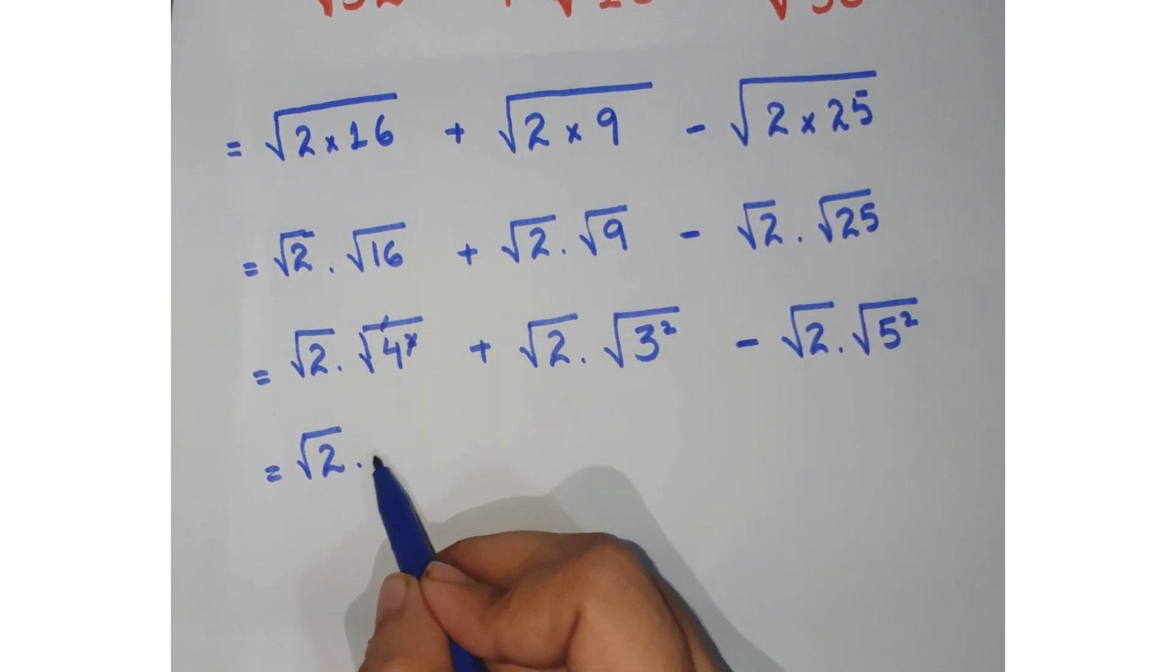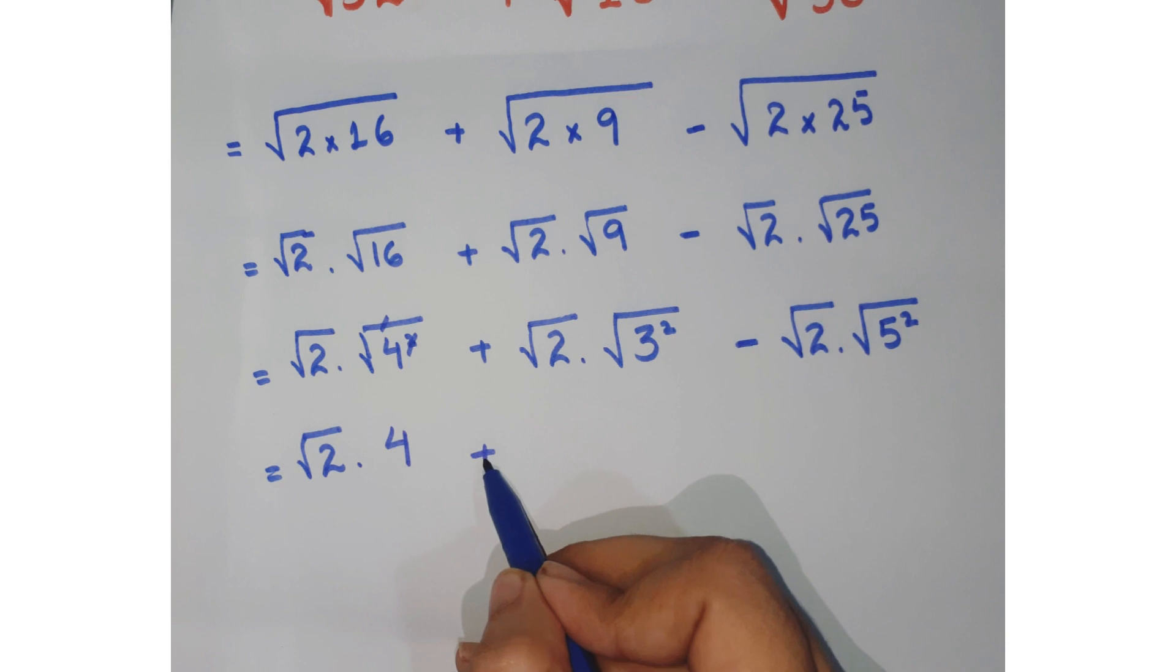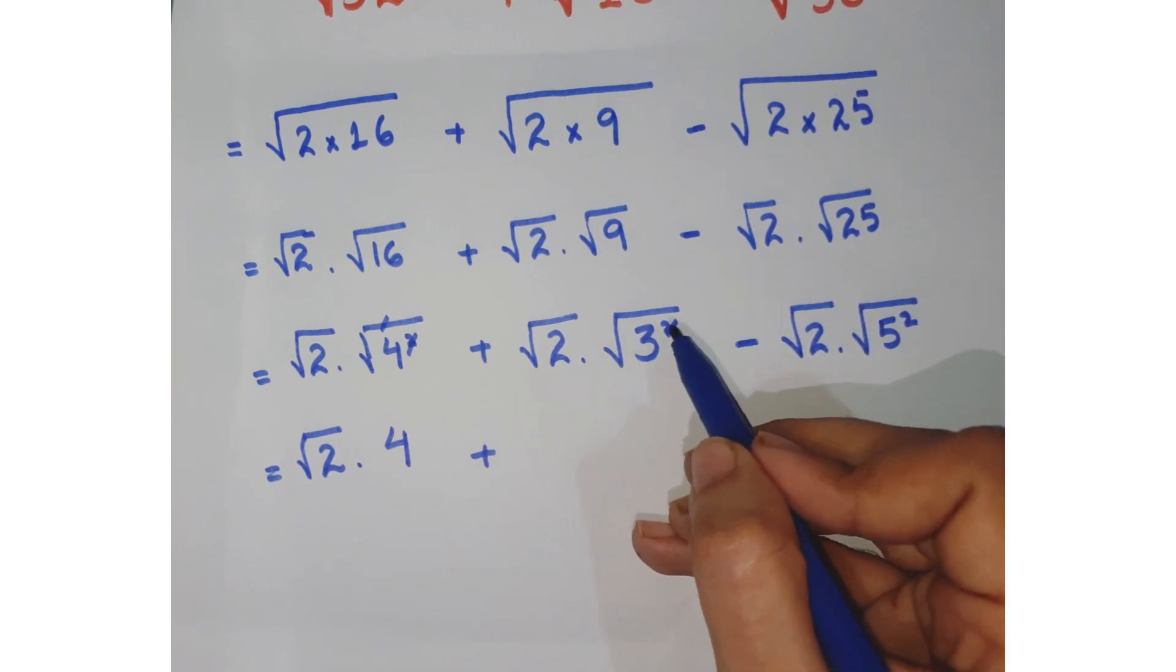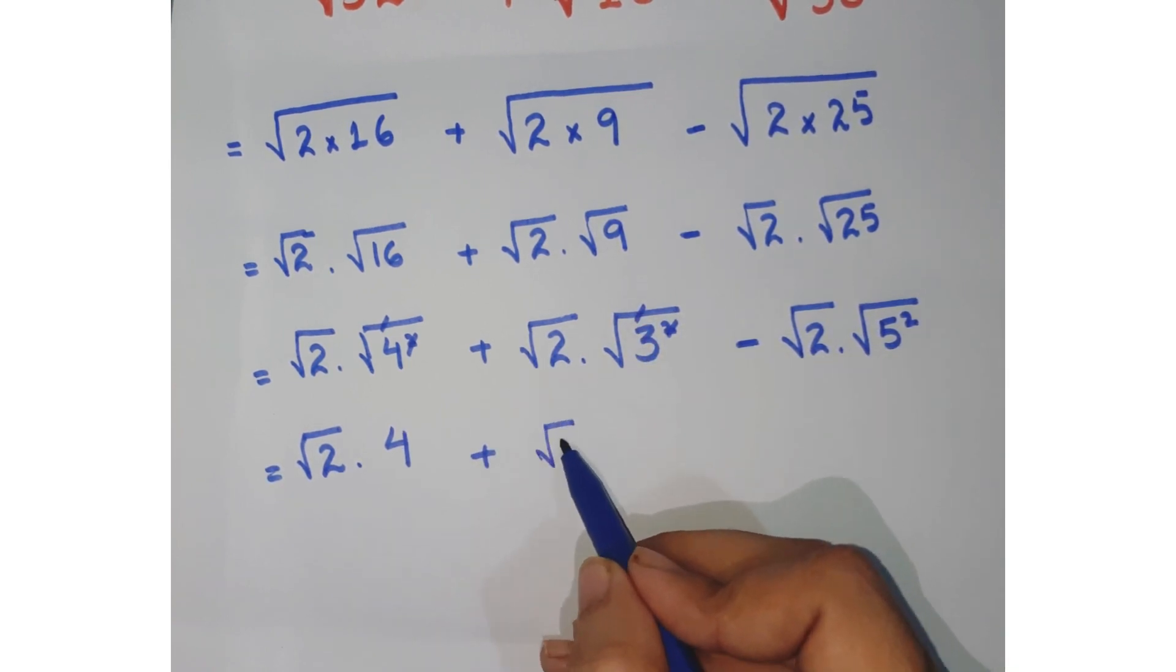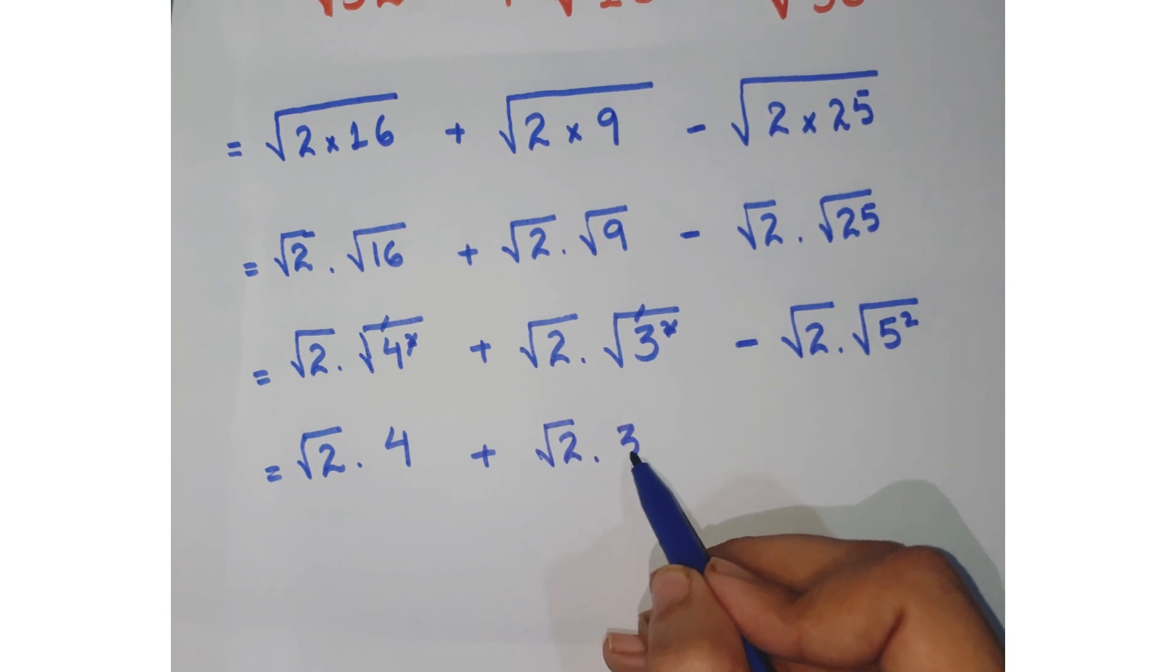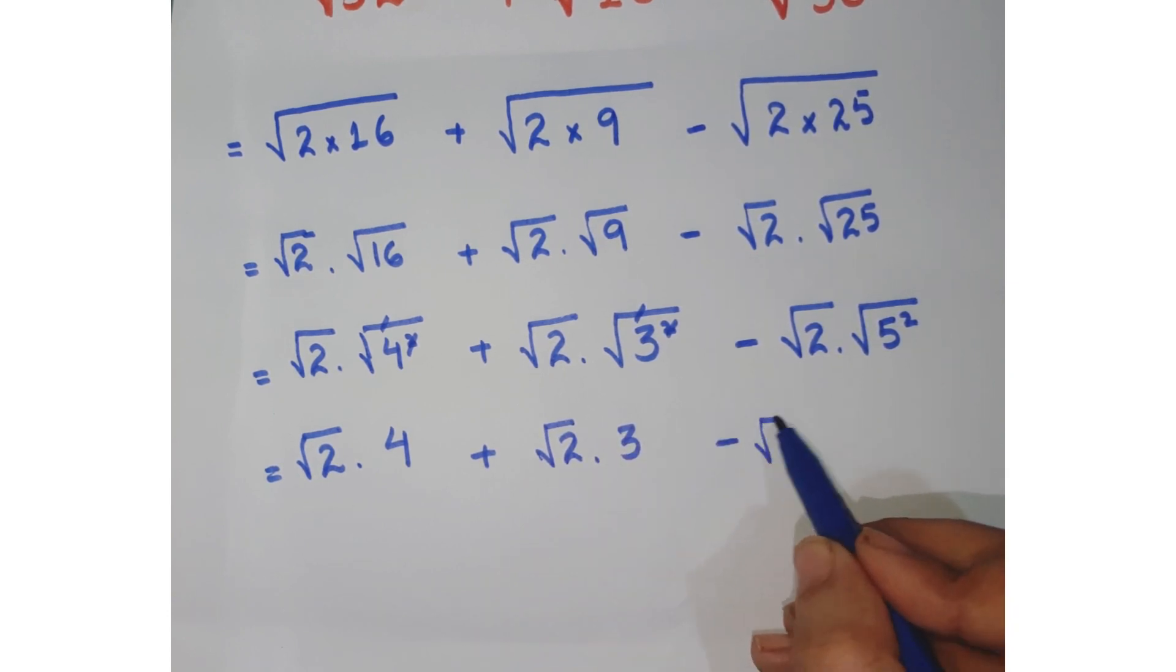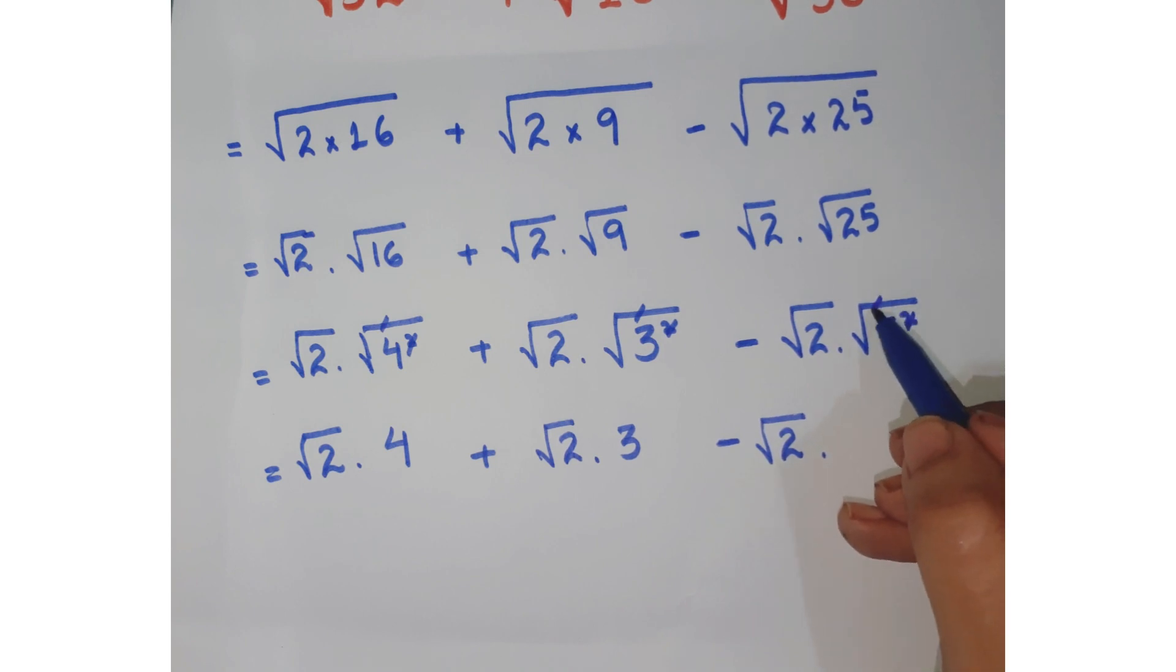Now just cancel out the square and the root. So you are left with √2 × 4 + √2 × 3 - √2 × 5.